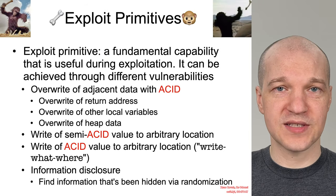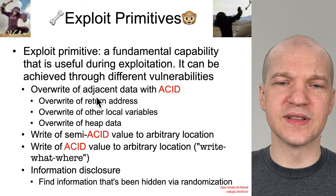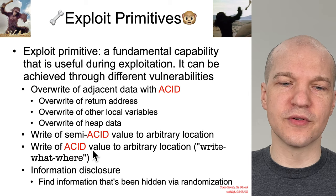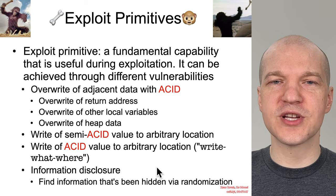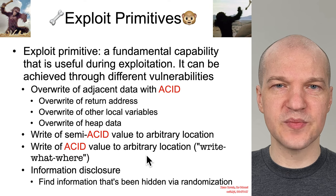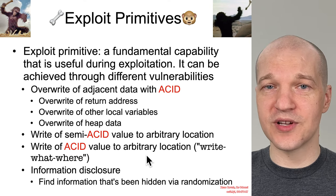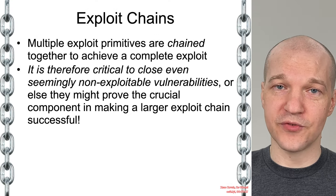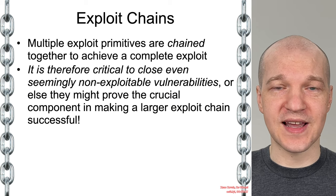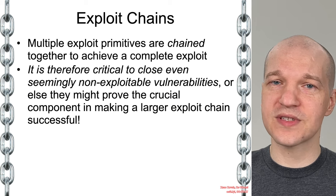We learned about exploit primitives and how an attacker will combine different things like adjacent data overwrites or information disclosure. They'll put all of these primitive little elements together, and subsequently they'll be able to create a full exploit chain. We learned about exploit chains — that idea of different attacker primitives combined together.